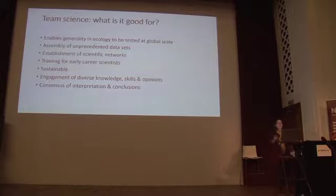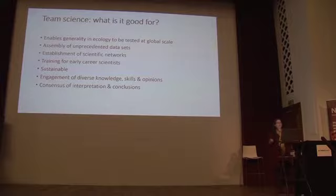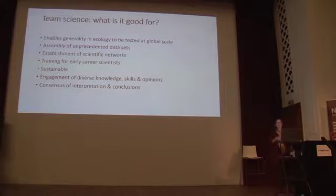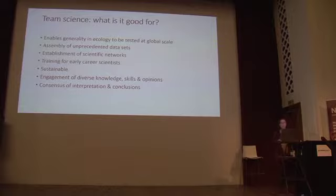So what's team science good for? As an ecologist, I'm very excited about our ability to say something general in ecology — asking questions at a global scale in lots of different environments, and asking whether the same processes operate everywhere or whether local context overrides more general patterns. There are also huge other benefits we don't talk about much. We can assemble unprecedented datasets which haven't existed before and would not be possible without all these people working together.